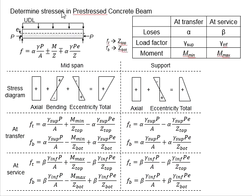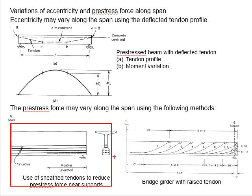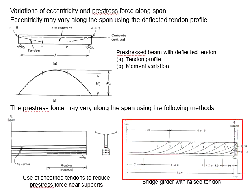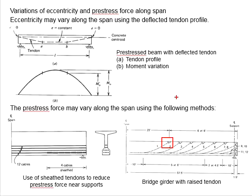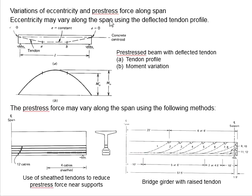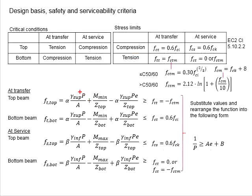Another method of adjusting P within the member is by terminating tendons at different locations along the span. Some tendons are stretched throughout the full length of the member, while others end at certain specific positions. At some positions all tendons contribute to the pre-stressing force, while at other positions only the remaining few tendons contribute. This again will vary the pre-stressing force between the midspan and the support, affecting the equations used to determine the stress in the member.